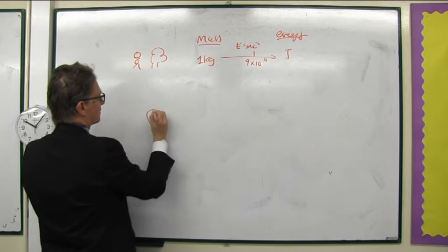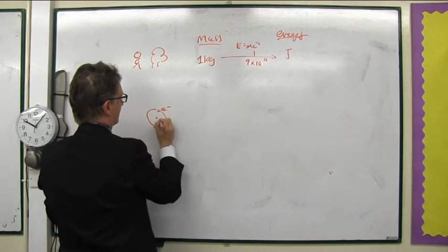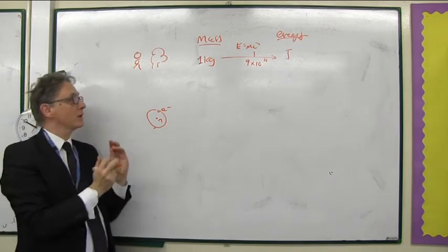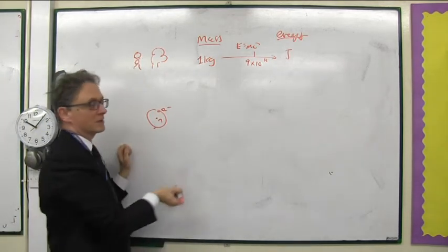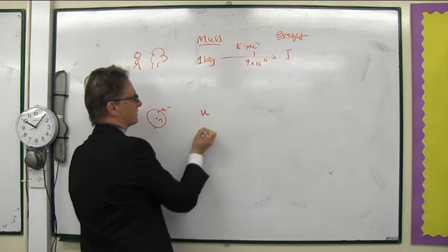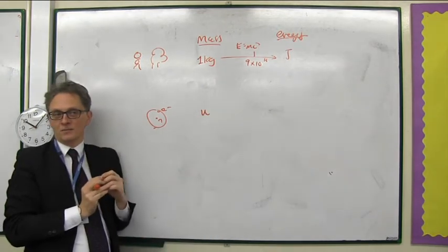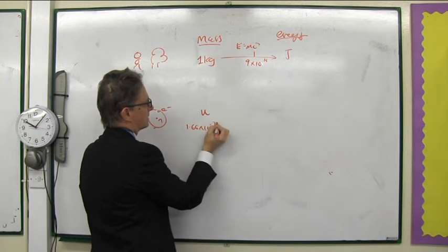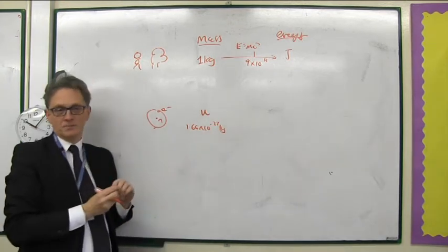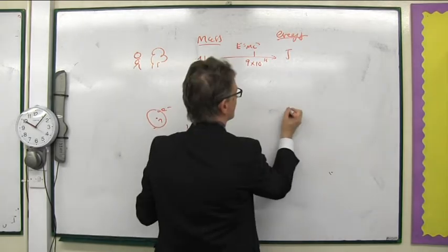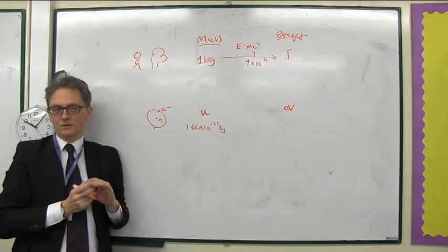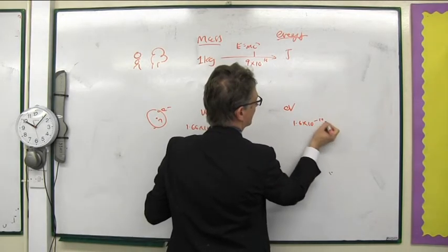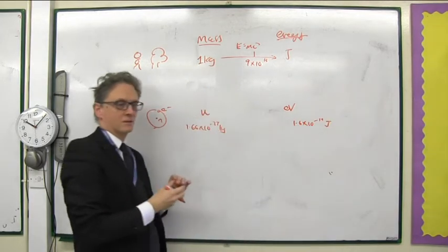Now, down here, we have the world of the atom. In particular, the nucleus. And on this level, we don't use kilogram for mass, we use the atomic mass unit U. 1.66 times 10 to the minus 27 kilograms. We also don't use the joule for energy, particularly we use the electron volt. And electron volt is 1.6 times 10 to the minus 19 of a joule.